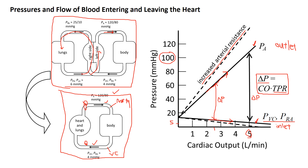If there's no flow, there's no pressure drop. Changing the resistance does not change the fact that when flow is zero, the pressure difference is zero. Now, if we increase the resistance, then at a given flow, the pressure difference is increased — and that's what these dashed lines are showing.